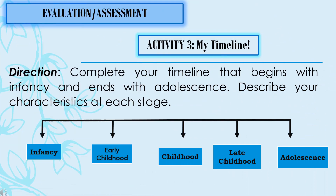Let's do the assessment. Activity number 3: My Timeline. I want you to complete your timeline that begins with infancy and ends with adolescence. Describe your characteristics at each stage. Copy the diagram below.